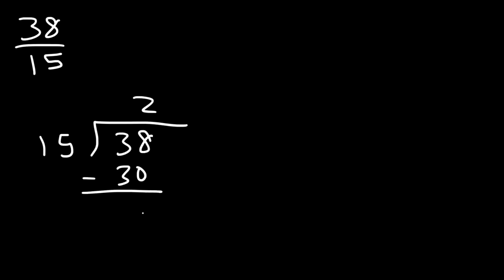So let's turn 38 over 15 into a mixed number. So I'm going to use long division for this example. 15 goes into 38 two times. 15 times 2 is 30. And 38 minus 30 is 8.